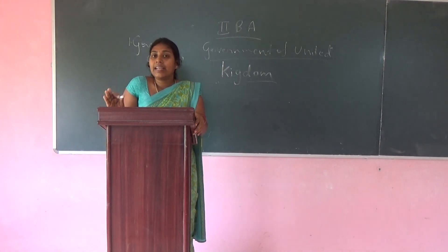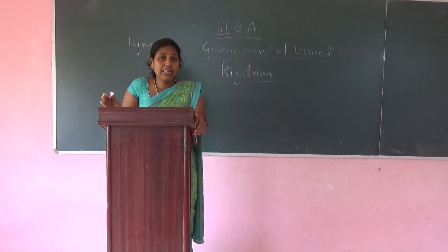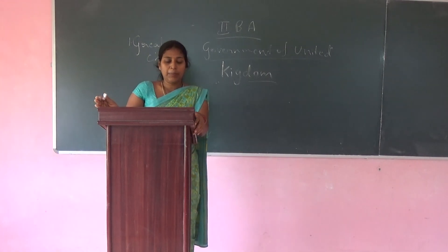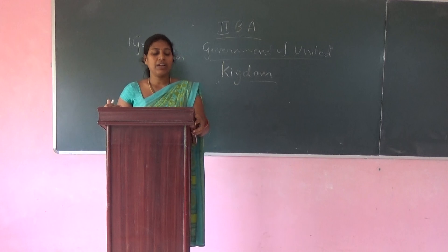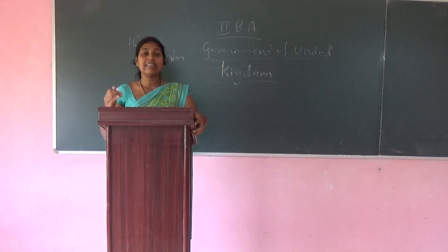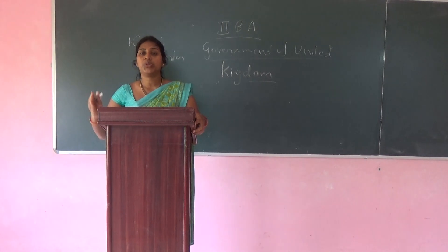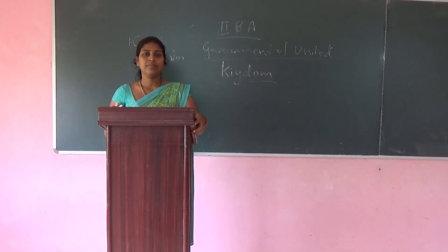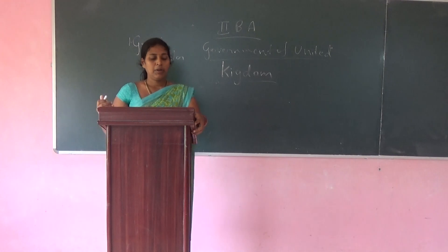The Magna Carta of 1215 is related to the respect of the liberty of the people. The Bill of Rights of 1689 is related to the constitutional monarchy.